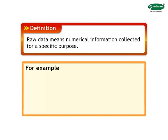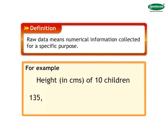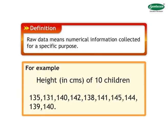For example, the height in centimeters of 10 children in a class is as given below: 135, 131, 140, 142, 138, 141, 145, 144, 139, 140. These numbers together is called raw data.